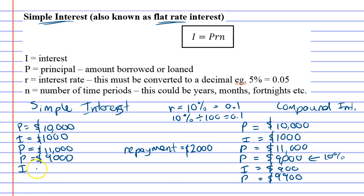But with simple interest it's not like that. Simple interest, the interest is always calculated on the original amount you borrowed. So because you originally borrowed ten grand, your interest remains one thousand dollars no matter what.